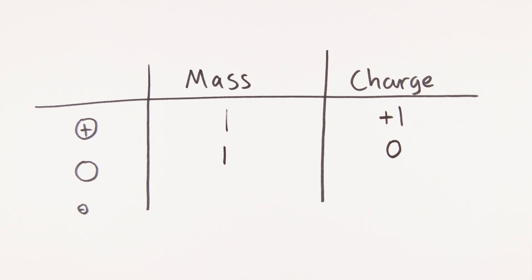Finally, the electron has a mass of 0.0005, which is negligible, and a charge of minus one.